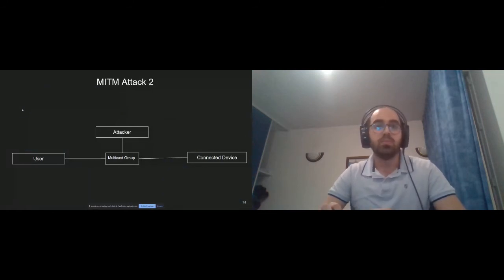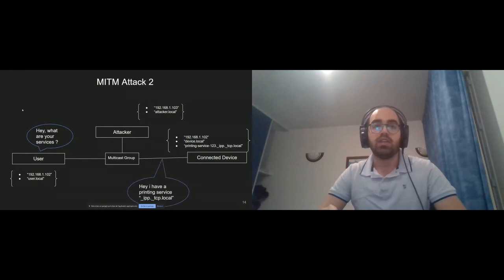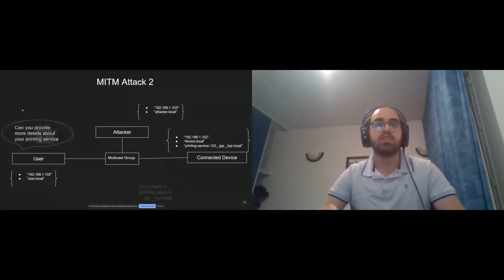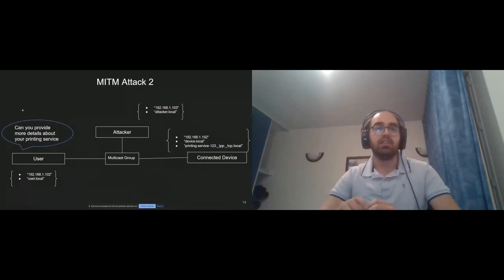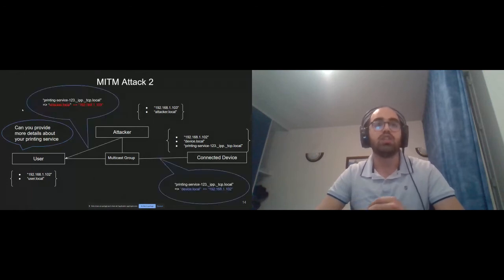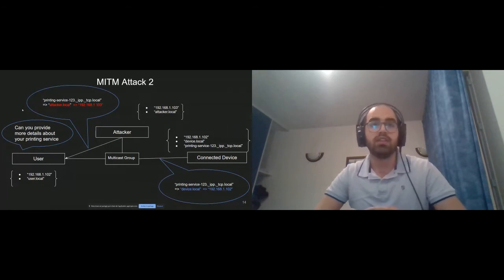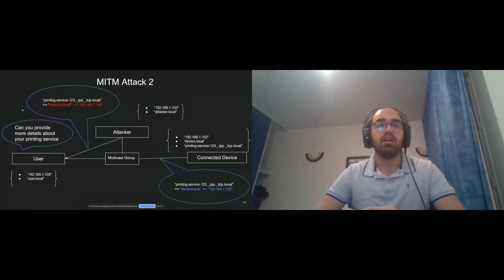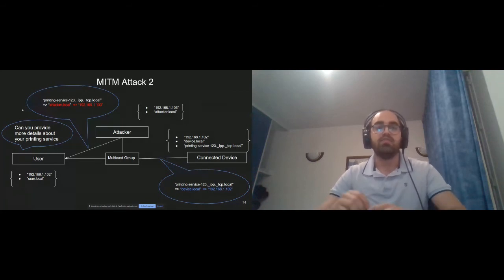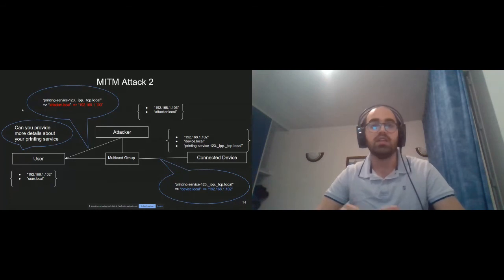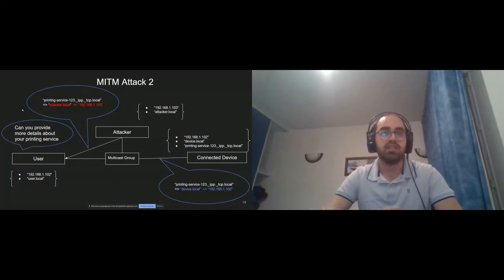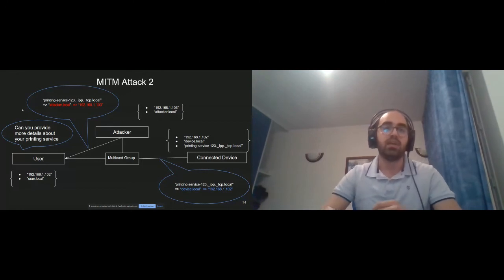In attack number two, the user asks about services, the connected device provides the printing service, and the user asks for additional information. Here the attacker changes the local domain name in the response — compared to the first attack. To reach the printing service, the user must reach attacker.local, which corresponds to the attacker's IP address. By manipulating certain fields and DNS record bits in the responses, the attacker succeeds at poisoning the user's cache and becoming the man-in-the-middle.